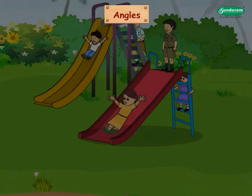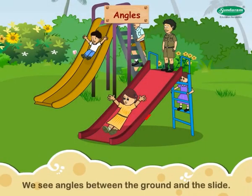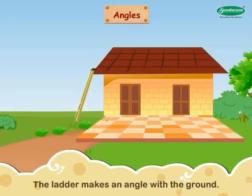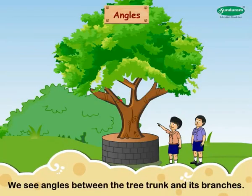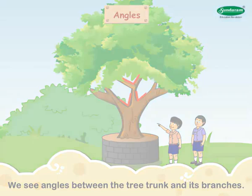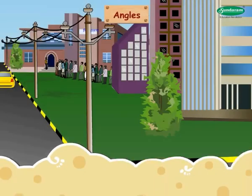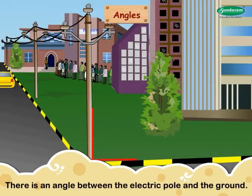Children, we see a lot of angles around us every day. We see angles between the ground and the slide. The ladder makes an angle with the ground. We see angles between the tree trunk and its branches. There is an angle between the electric pole and the ground.